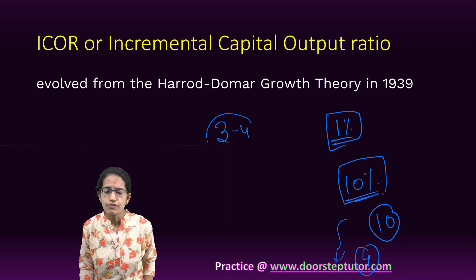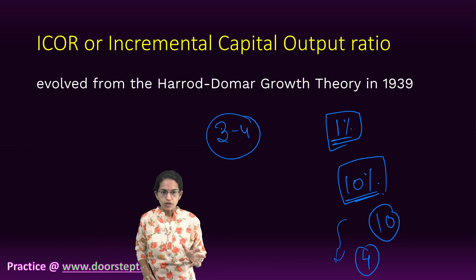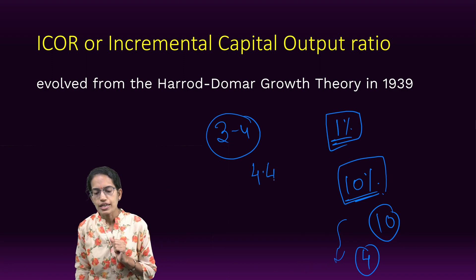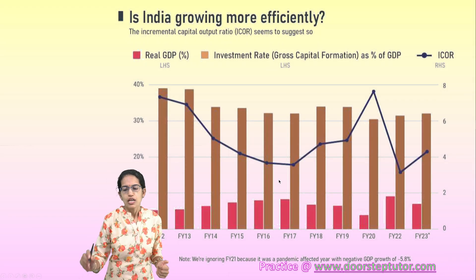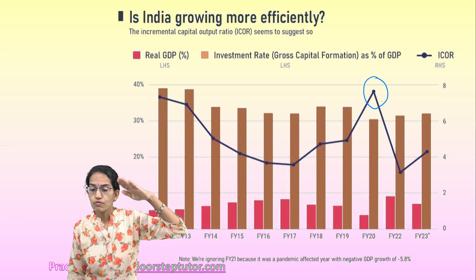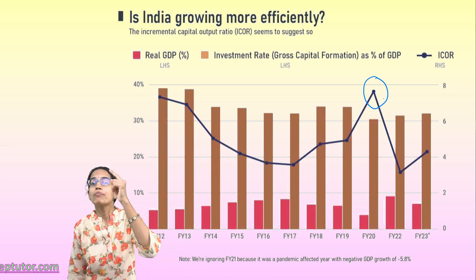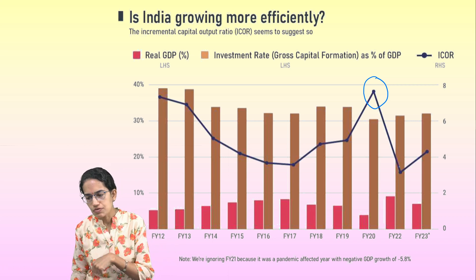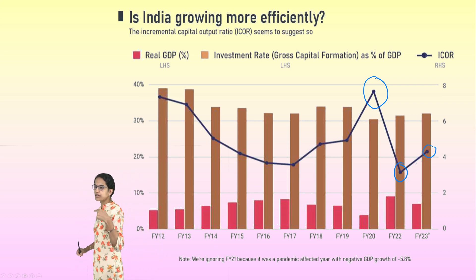Economists retain the value somewhere between 3 to 4. If the values are between 3 to 4 for ICOR, that means the economy is in its most productive and efficient state. For India, the current rate is 4.4, which is a little higher than the optimum values. However, if we talk about financial year 2020, our ICOR values were very, very high — meaning the economy was not in a productive or efficient state. So, as this value declines, it indicates that the economy is working more efficiently.